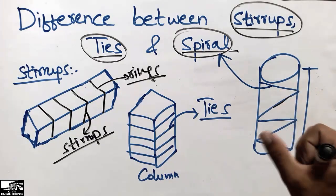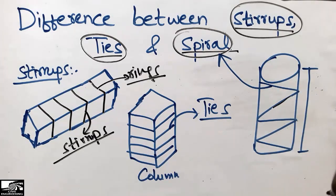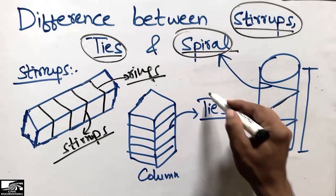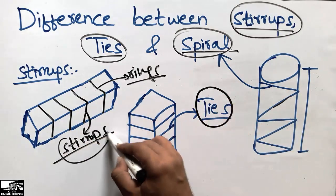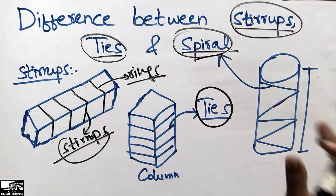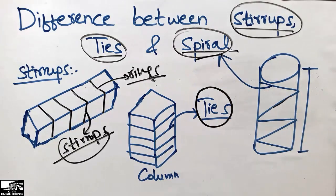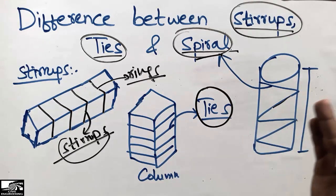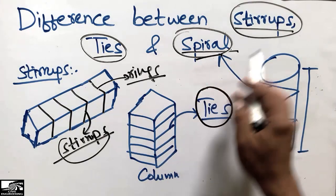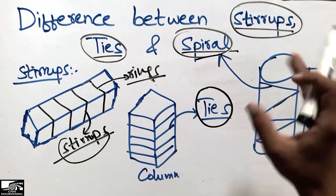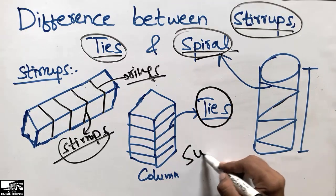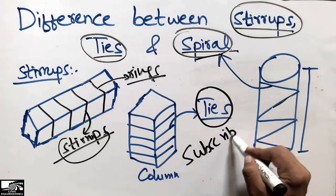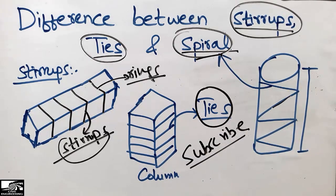So that was the main difference between these three types of reinforcement. Their function and purpose is the same — they bond the main reinforcement and resist shear forces — but the technical terms differ: stirrups for beams, ties for rectangular or square columns, and spiral for circular columns. Don't forget to subscribe to our channel for daily civil engineering videos. Thank you for watching.